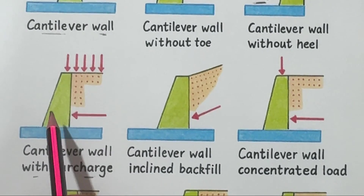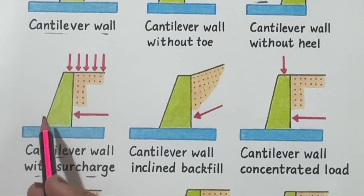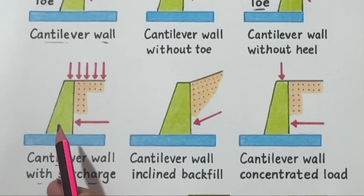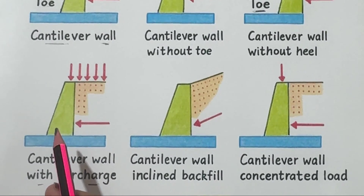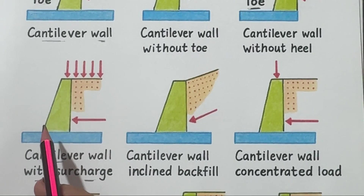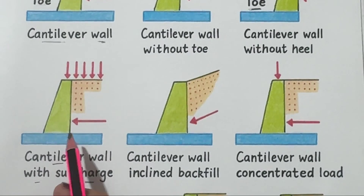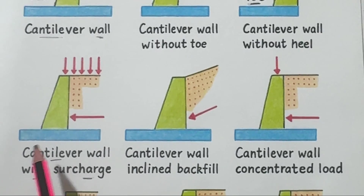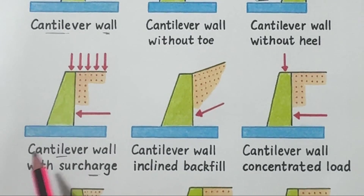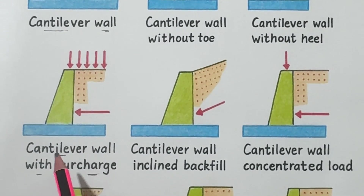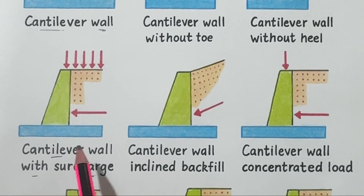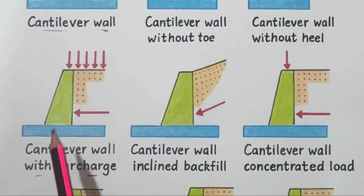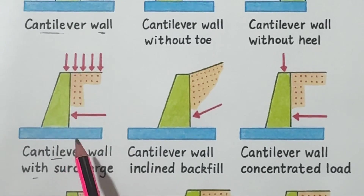Number four: cantilever wall with surcharge. Imagine there's extra weight or load on the soil surface behind the wall — like parked vehicles, a building, or an embankment. That's called a surcharge. This extra load increases the pressure on the wall, so it must be designed stronger, with thicker reinforcement or a wider base.